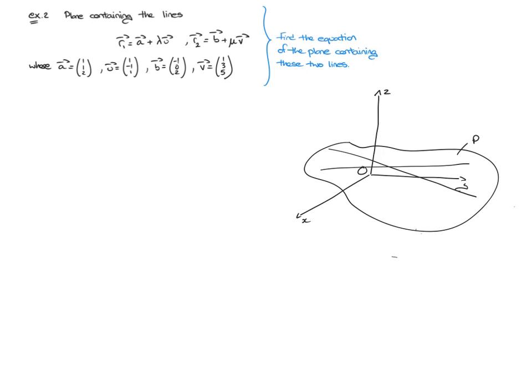I can tell that these two lines aren't collinear simply by looking at the two direction vectors — these two vectors are definitely not collinear, since one is not just a scalar multiple of the other. In other words, I can't get from U to V simply by multiplying one or the other by a simple number.